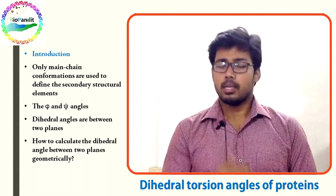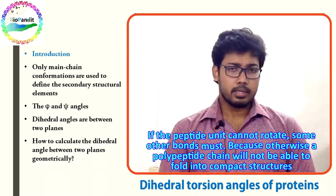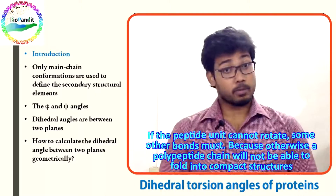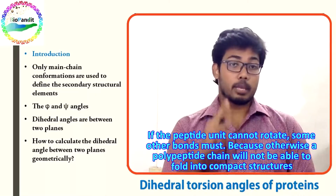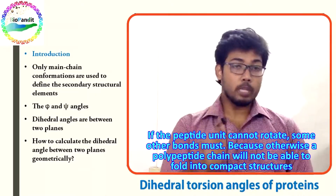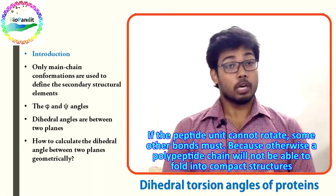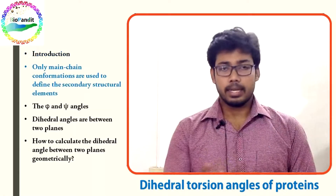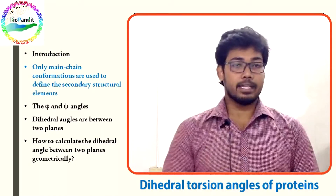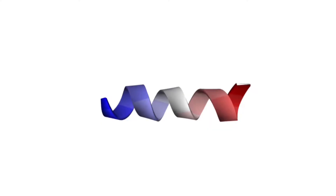If the peptide unit cannot rotate, some other bonds must, because otherwise a polypeptide chain will not be able to fold into compact structures. Let us first create an alpha helix structure to get some idea. Alpha helix is a secondary structural element of a folded protein.